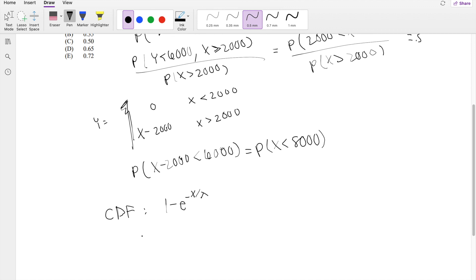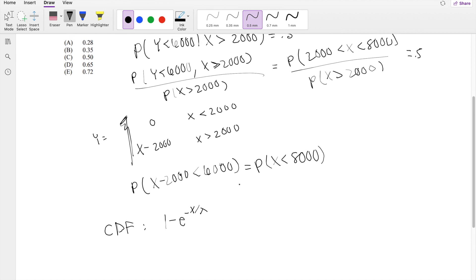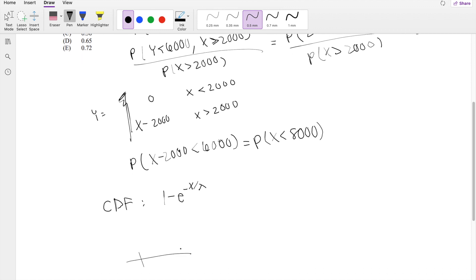So using that term, we know that if we want to try to find between 2,000 and 8,000, then if we use the CDF, it is basically the CDF of 8,000, F of 8,000, minus the F of 2,000 here to get the range that we want.